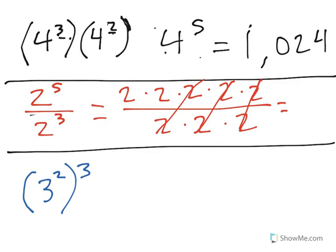We're left with nothing in the denominator, and the numerator is only 2 times 2, which is 2 squared or 4.